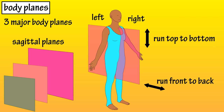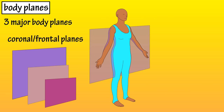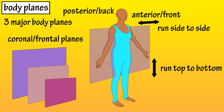If a sagittal plane runs down the midline of the body and divides it into equal halves, it's called a mid-sagittal plane. Coronal or frontal planes run side to side and top to bottom. These planes divide the body into anterior and posterior sections.